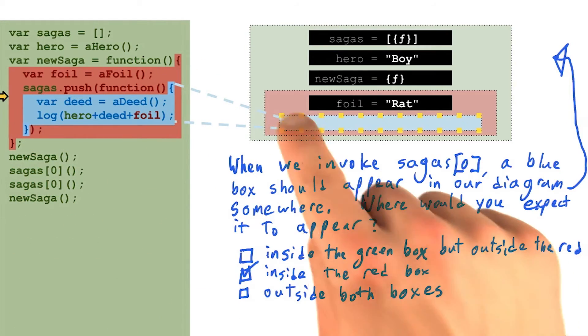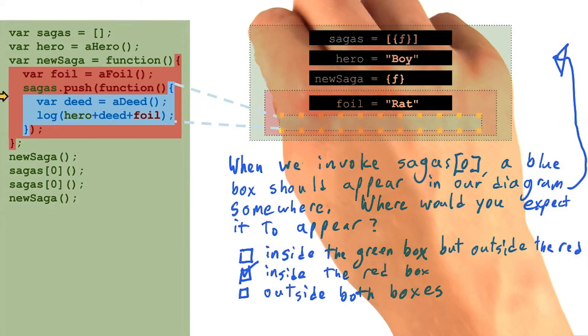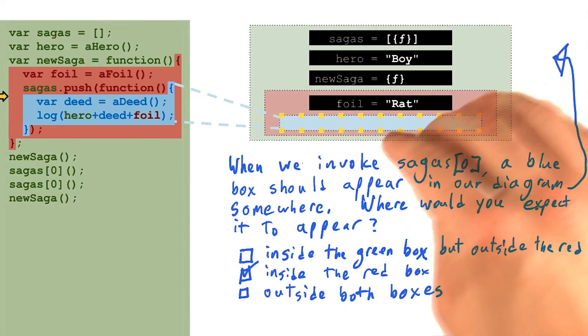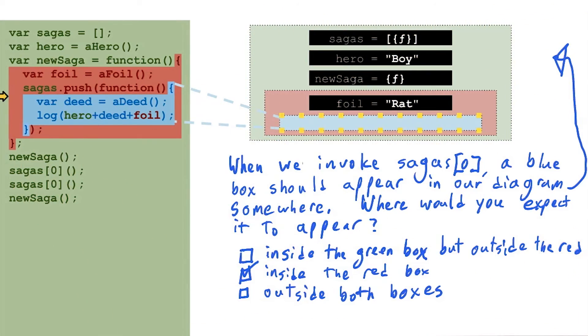It wouldn't make sense if this blue box appeared in the green box, because that would mean it had no access to the 'foil' variable.